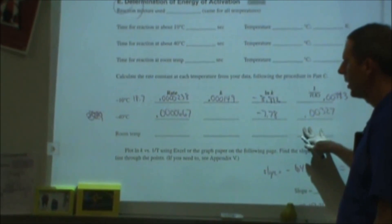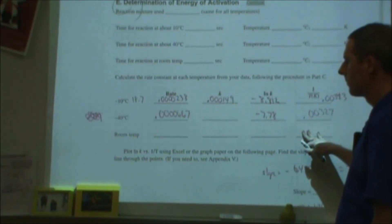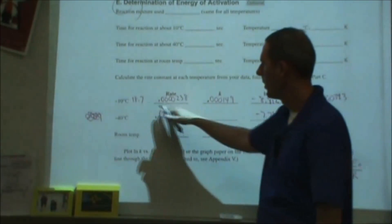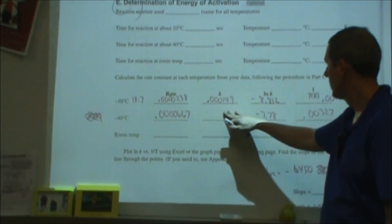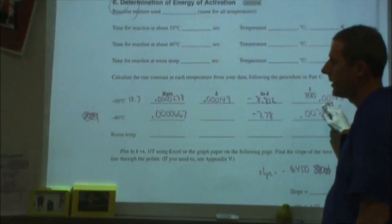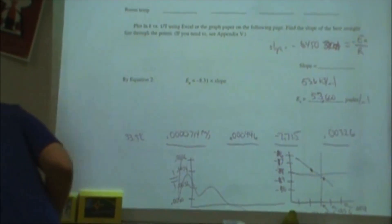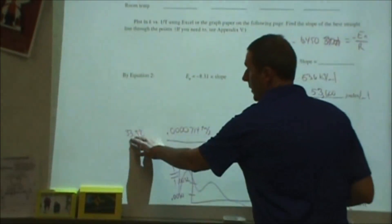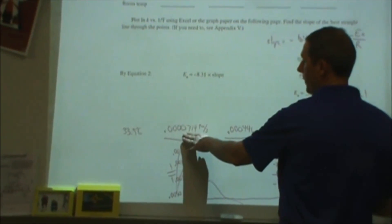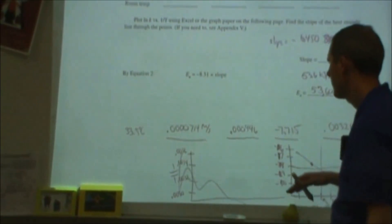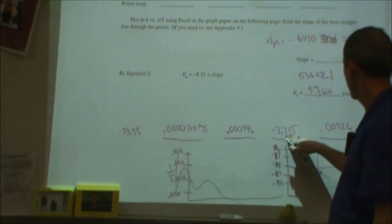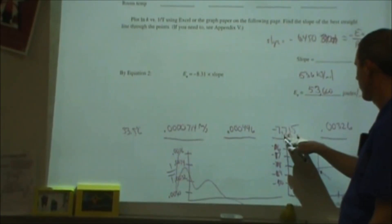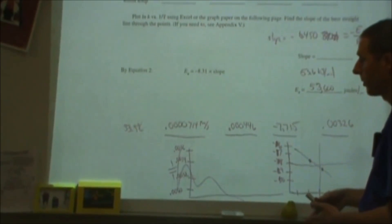I re-ran the experiment at different temperatures. At a colder temperature, I measured a rate, plugged it into the rate law to get the rate constant, then took the natural log of k and calculated 1/T. At a higher temperature—only about 15 degrees difference—the rate was over three times as large. I took the natural log of that rate constant and the reciprocal of that temperature as well.